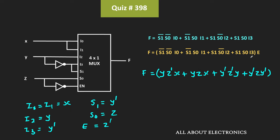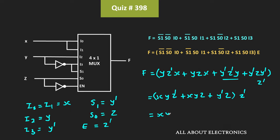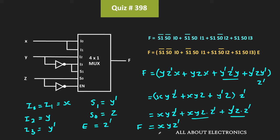These four terms will get multiplied with the enable signal, which means multiplied with z̄. Looking at the terms: y·y' equals zero, so that term cancels out. We then have x·y·z̄ + x·y·z + y'·z, all multiplied by z̄. Distributing z̄ gives x·y·z̄ + x·y·z·z̄ + y'·z·z̄. Since z·z̄ equals zero, the last two terms become zero, and we are left with x·y·z̄.